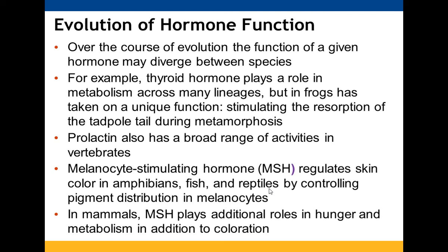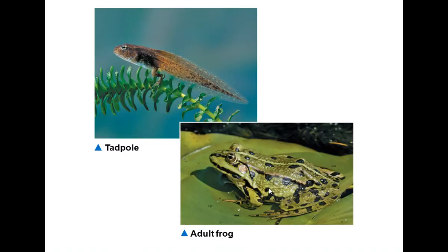Hormone function can diverge between species over evolution. Thyroid hormone plays a role in metabolism across many lineages, but in frogs it also reabsorbs the tadpole tail during metamorphosis. Prolactin also shows a range of activities across species. MSH controls pigment distribution in melanocytes — regulating skin color in fish, amphibians, and reptiles — and in mammals plays roles in coloration as well as hunger and metabolism.